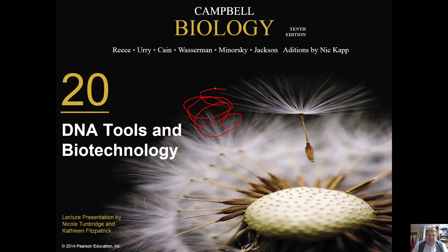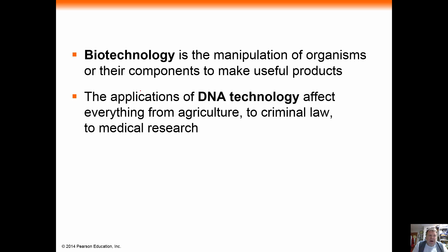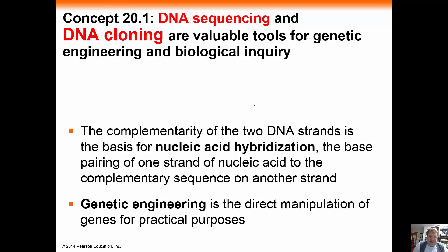Hello and welcome to this short 20-minute wrap-up of chapter 20: DNA Tools and Biotechnology. Biotechnology is the manipulation of organisms or their components to make useful products — essentially using your knowledge of biotechnology to make something and make money. A number of things we're going to look at are basically dependent on what we call nucleic acid hybridization.